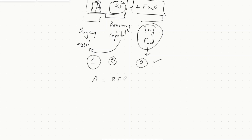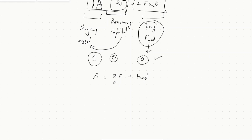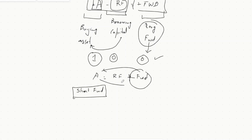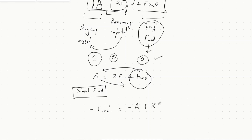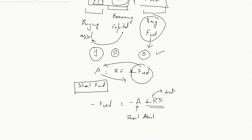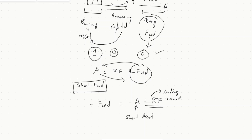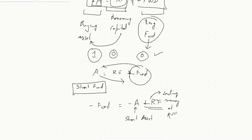Now let's do another rearrangement. Say somebody asks you on the CFA Level 1 exam — and this is one of the examples in the curriculum — how do you create a short forward? I'll move the forward to the left side and the asset to the right side: −Forward = −Asset + Risk-Free. A short forward equals short asset plus long risk-free. Short asset means selling the asset, and plus risk-free means lending money at the risk-free rate, or buying a bond.